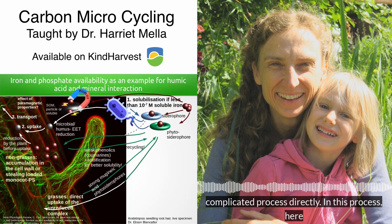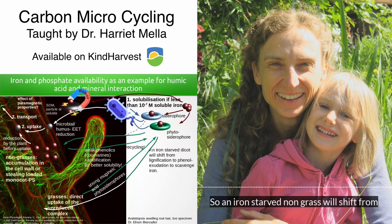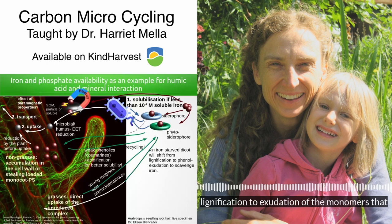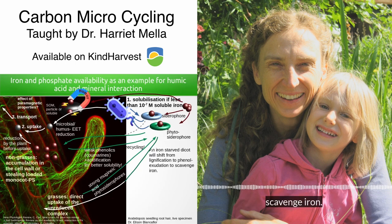In this process it is very likely that paramagnetic properties play a role. So an iron-starved non-grass will shift from lignification to exudation of the monomers that would become lignin, and throws them out to scavenge iron.